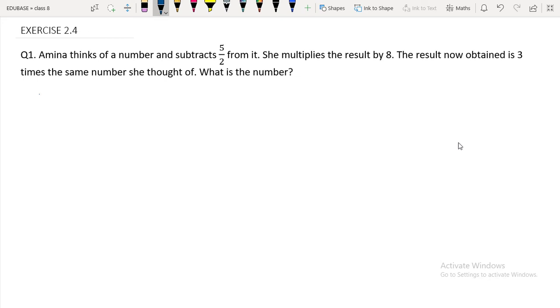Exercise 2.4, question number 1. Amina thinks of a number and subtracts 5 by 2 from it. She multiplies the result by 8. The result now obtained is 3 times the same number she thought of. What is the number?